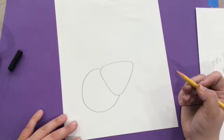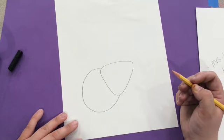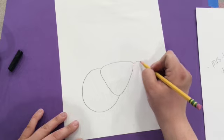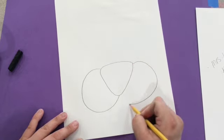Then make a C-shape on one side for part of our tiger's cheeks, and then make a C-shape on the other side.